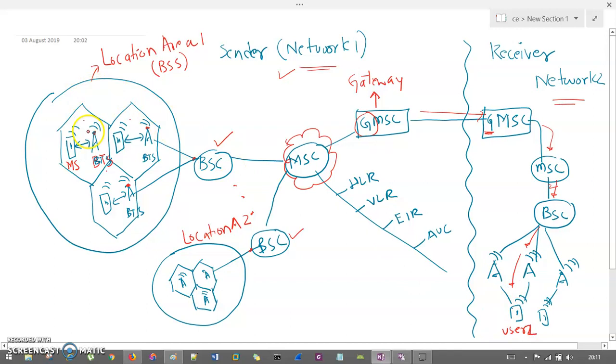So, this user 1 wants to connect to this user 2 here, then he needs to generate that signal. It goes to the BTS, goes to the BSC, goes to the MSC, goes to the GMSC, and then this GMSC sends the signal to the receiver side GMSC, forwarded to the MSC, forwarded to the BSC, to the BTS, and that to the user 2.